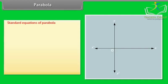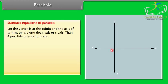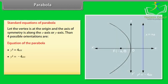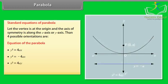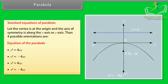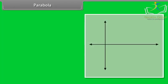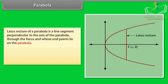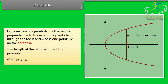Standard equations of parabola: Let the vertex be at the origin and the axis of symmetry along the x-axis or y-axis. Then four possible orientations are: y² = 4ax, y² = −4ax, x² = 4ay, x² = −4ay. The latus rectum of a parabola is a line segment perpendicular to the axis of the parabola, through the focus, whose endpoints lie on the parabola. The length of the latus rectum of y² = 4ax is 4a.